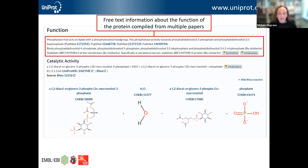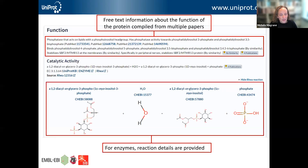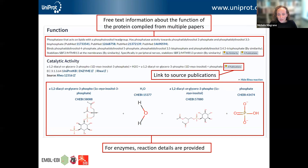To access information about the function of the protein, you can click on the function tab. At the top you get a free text description about the function of the protein, compiled from multiple papers. MTMR2 is a phosphatase, so it's an enzyme, and there's information provided about which reactions it catalyzes. There are also links to source publications so that you can see exactly where this information has been shown.